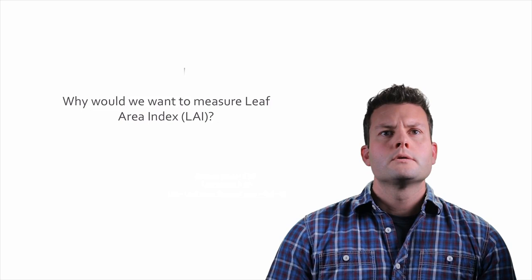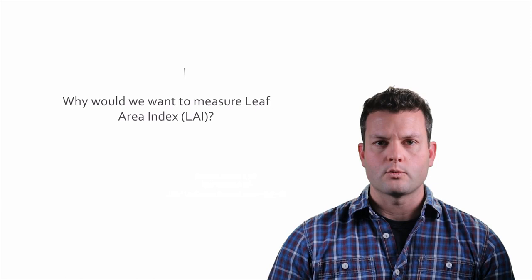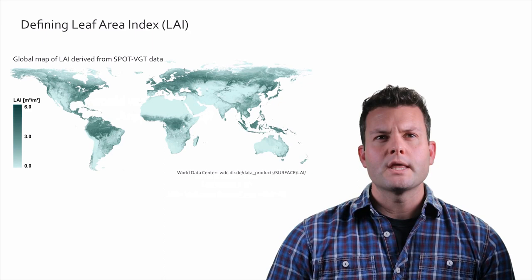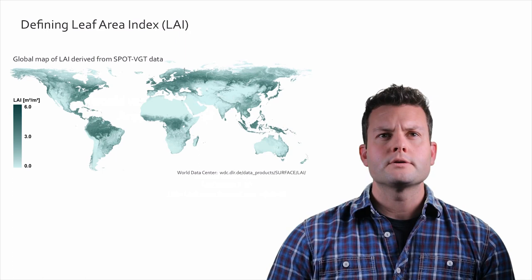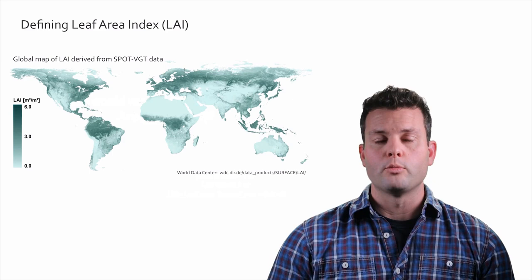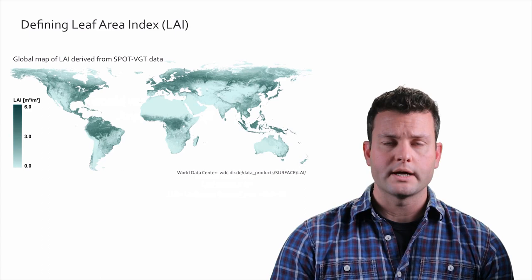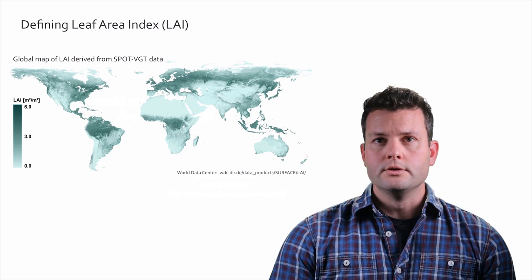I'd like to discuss why we would want to measure leaf area index — why is it useful? LAI is one of those variables that is pretty ubiquitous. It's used all over the place because it's simple but also extremely descriptive. I've shown a map of global LAI derived from satellite data where high LAI areas are represented by dark green and low LAI by light green. Focusing on the tropics around the equator, that's where we have some of the densest, highest LAI forests anywhere on earth.